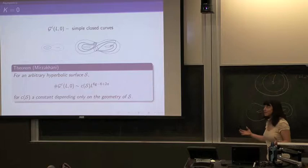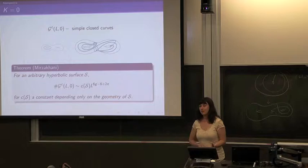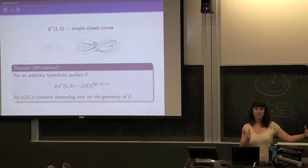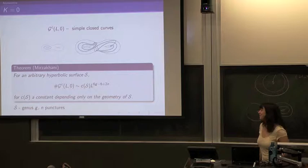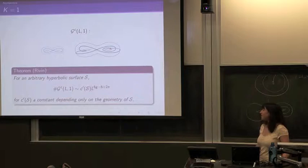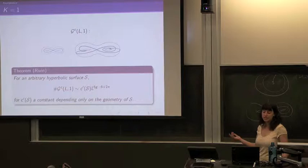You're looking at what a simple closed curve or simple closed multi-curve is — it's something integral. And somehow this growth rate is related to a tangential theme. S is a genus-g surface. And then we also know for K equals one, you get the same growth rate with a different constant depending on S.